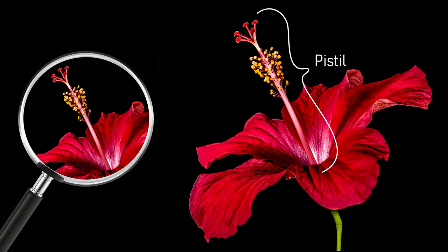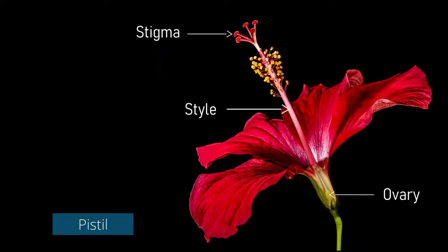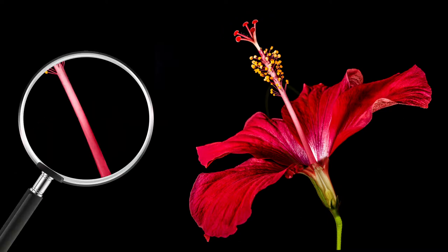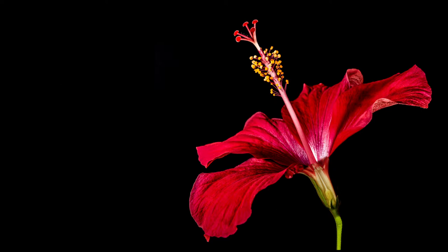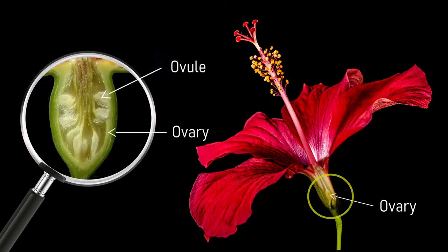The female part of the flower is called the pistil. It is made up of the stigma, style, and ovary. The stigma is usually hairy or sticky to trap the pollen grains. The style connects the stigma to the ovary. The ovary, which is shaped like a capsule, is located at the base of the flower. It contains the ovules, or the eggs.